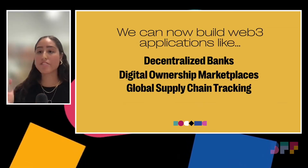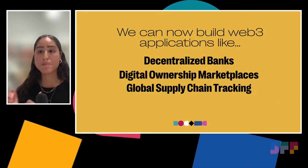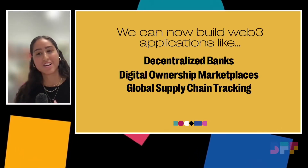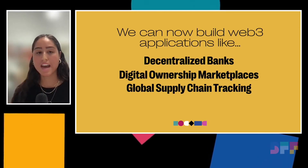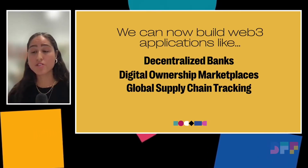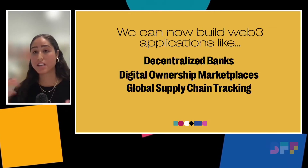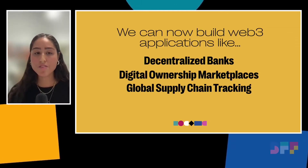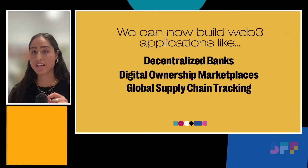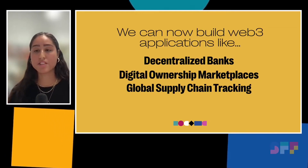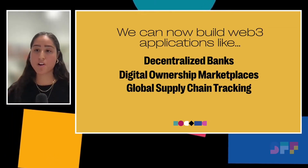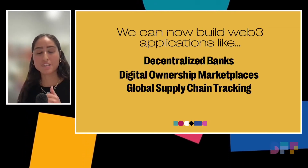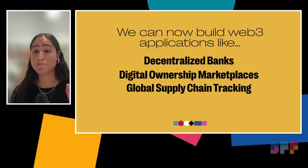One: a decentralized bank. Rather than having a central party determining your bank account, anyone can spin up a bank account without needing a social security number or approval — you get instant access. There are also digital ownership marketplaces and whole new economies being created. One that really stuck with me is global supply chain tracking — provenance. We have this global economy of products; how do we track every single hand a product passes through before it reaches us? We can do that using the blockchain because of its properties.